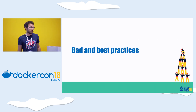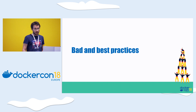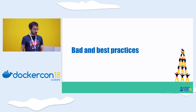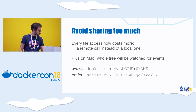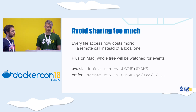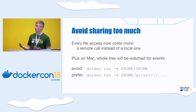We saw there are implementation differences between Linux and Docker Desktop, and that by architecture we will not be able to have the same performance. So we're going to show you some best practices. One of the most powerful techniques you can use is to just avoid sharing too much, because every file access now costs more — a lot of latency, many user-kernel context switches, and VM-to-host context switches.